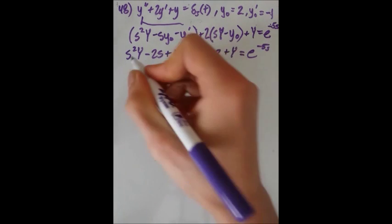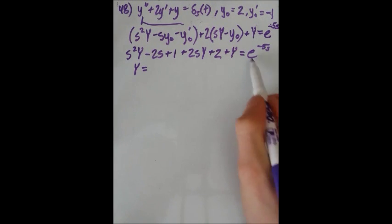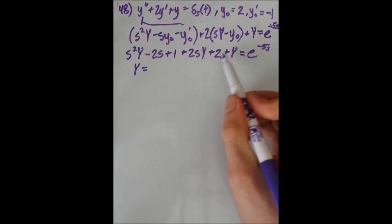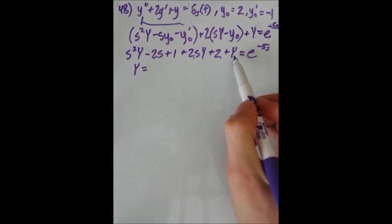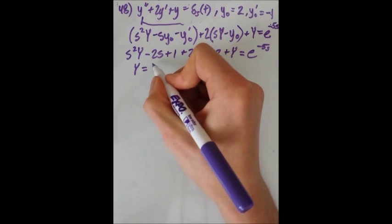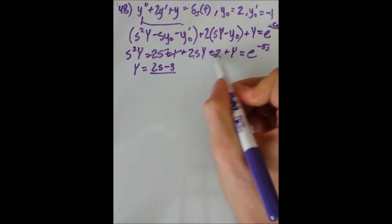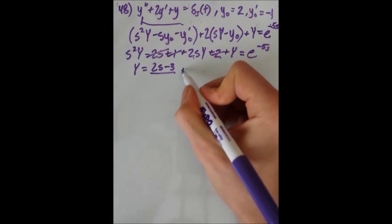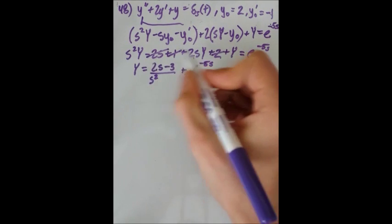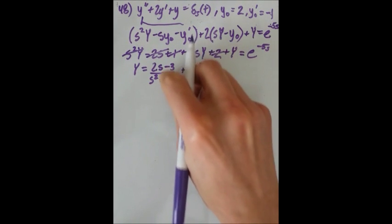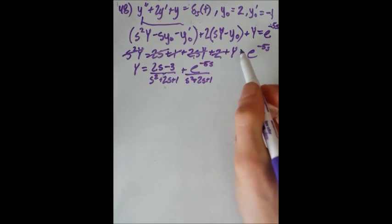Now we collect all terms and solve for uppercase Y. Doing the algebra and splitting into groups, we send terms over and get everything divided by s squared plus 2s plus 1. Writing it in a helpful form: the 2s was brought over, the minus 3 comes from combining the 2 and 1, giving us a numerator of 2s minus 3, plus e to the minus 5s, all divided by s squared plus 2s plus 1.